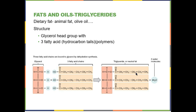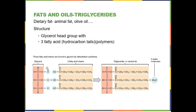Fats and oils are called triglycerides. It doesn't matter whether this is solid animal fat trimmed off a steak or a plant fat like olive oil, canola oil, or vegetable oil — this is what all your fats and oils look like. They're called triglycerides because they start with a glycerol head group, and then three fatty acid tails or hydrocarbon tails are added. This is also a dehydration synthesis reaction.